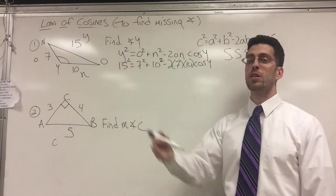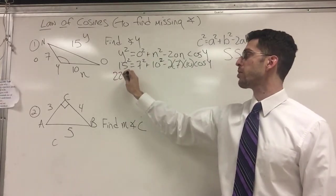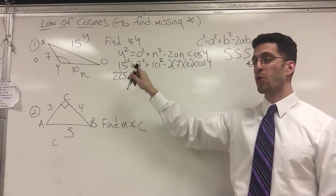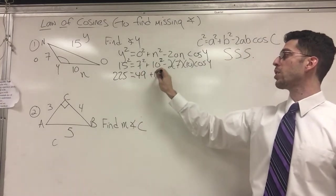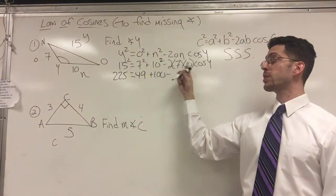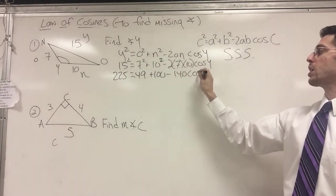So don't get overwhelmed. One step at a time. Now, 15 squared, you want a calculator, use it. 225 equals 49 plus 100 minus two times seven times 10. What is this? 14 times 10 is 140. 140 cosine Y.